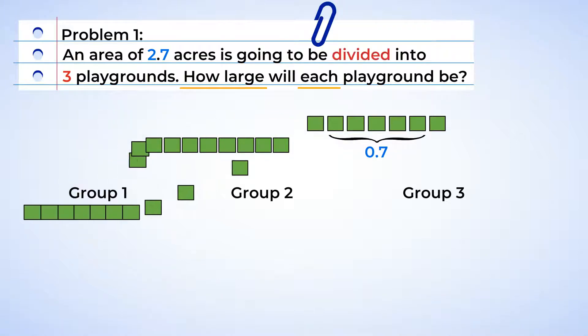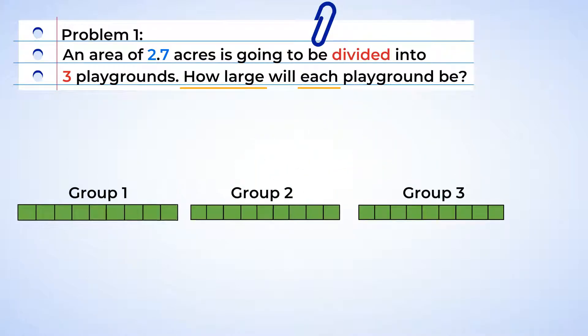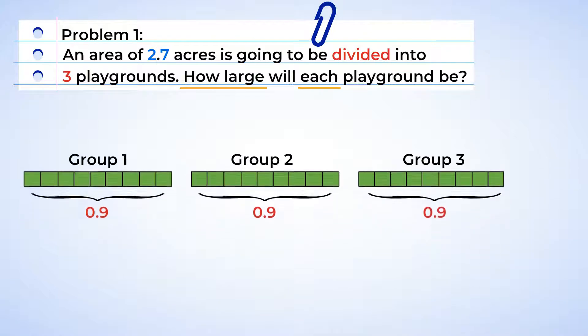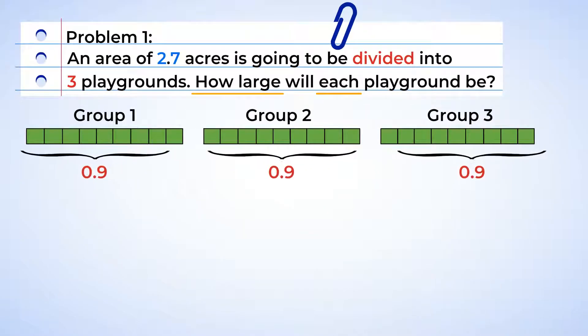Look at that. Each group has nine tenths in it. And that means each playground will be nine tenths of an acre. I think that's enough room for some climbing structures.